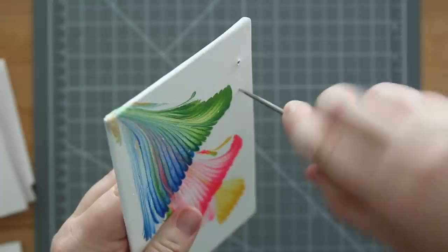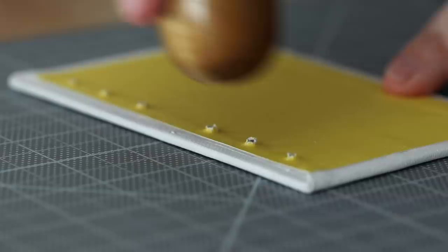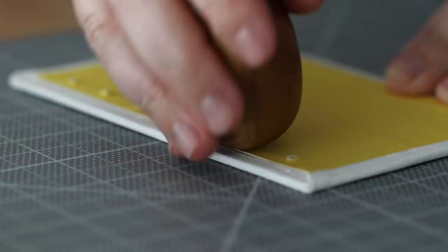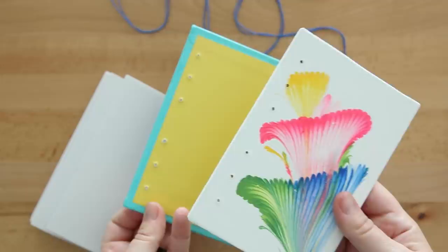I also try to press down any paper that comes out of the piercing process. If you have a screw punch, this will avoid that problem, but otherwise you can just press it down with a bone folder or an awl. Repeat those steps on the other cover, and now I'm going to prepare the thread for binding.